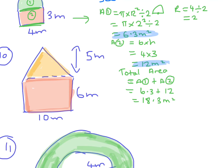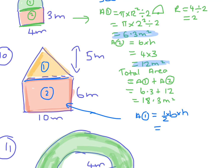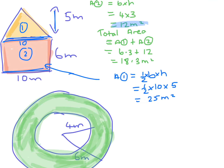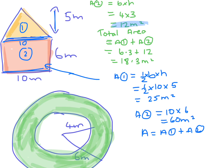The next shape has area 1 and area 2. Area 1 is a triangle — a half times base times height. The base is 10 and the height is 5, so a half times 10 times 5 gives 25 meters squared. Area 2 is a rectangle: 10 times 6 which is 60 meters squared. The total area is 25 plus 60, which is 80 meters squared.